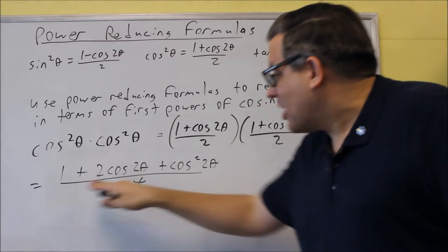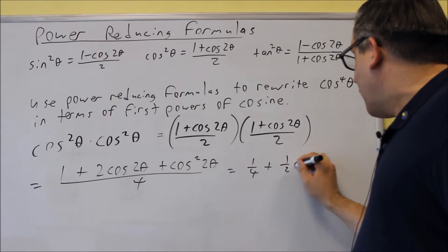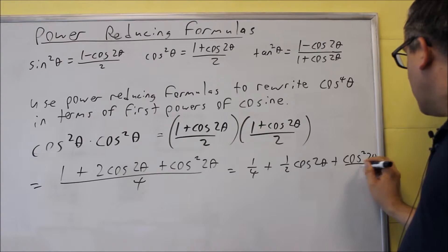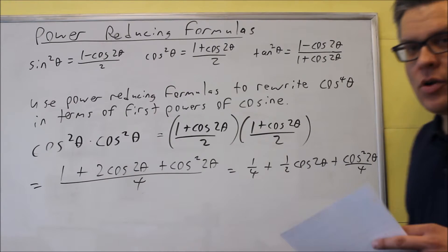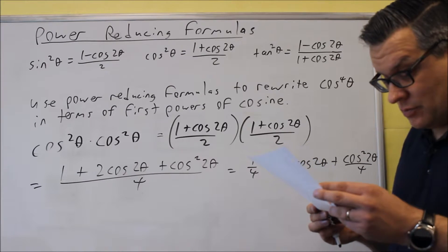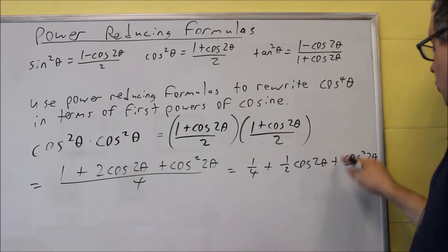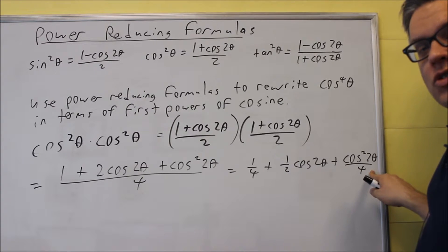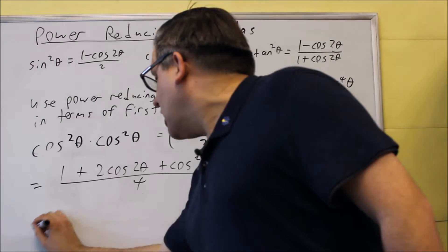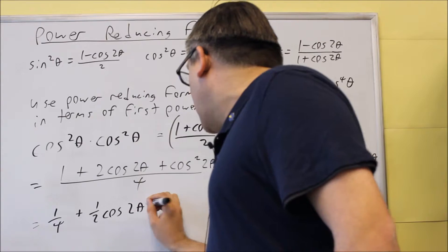Next, we're going to separate all these terms and divide each by four. So we get one-fourth plus one-half cosine(2θ) plus cosine squared(2θ) over four. We keep the first two terms as they are: one-quarter and one-half cosine(2θ) are fine the way they are.